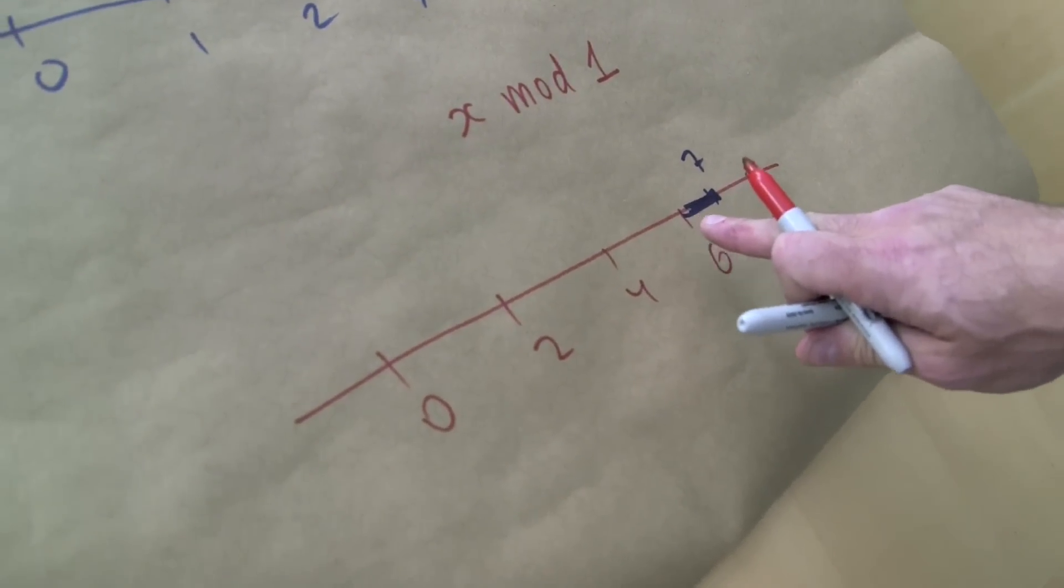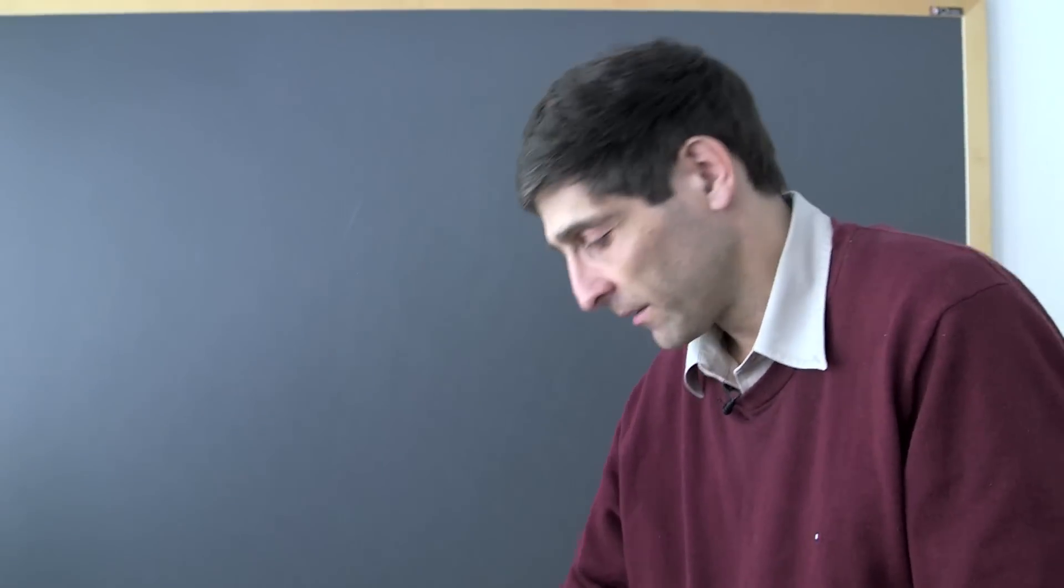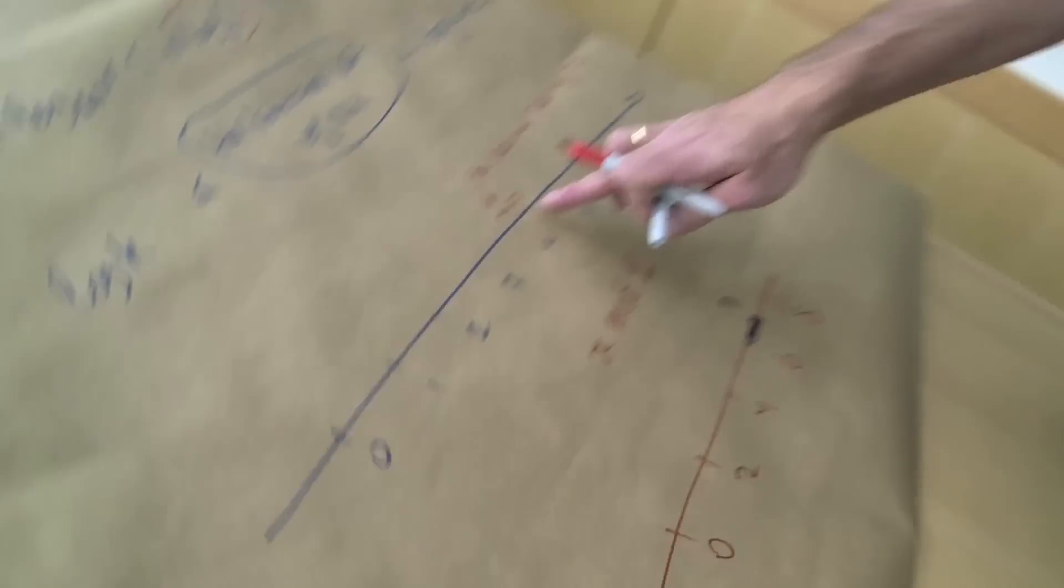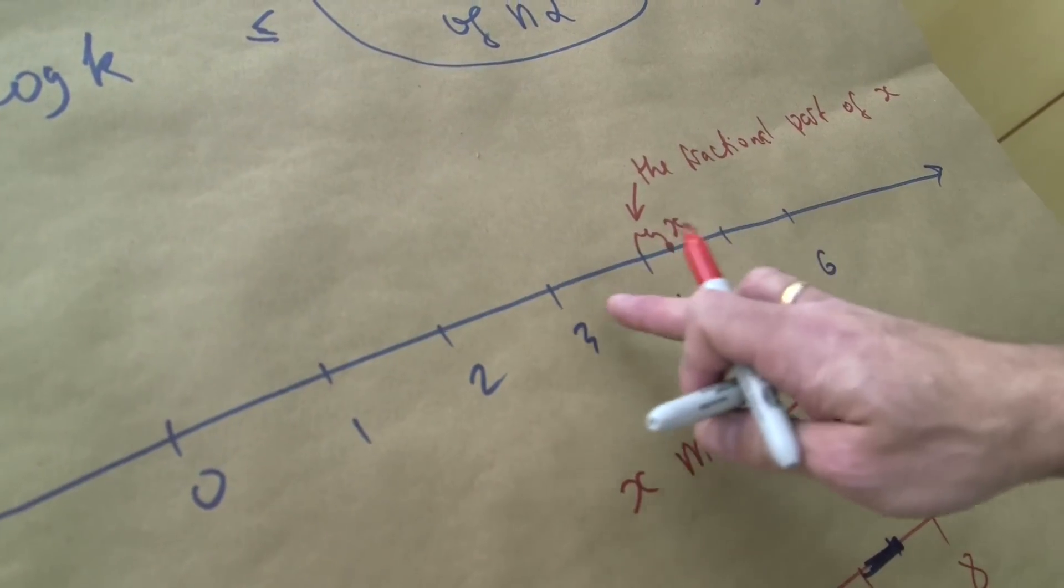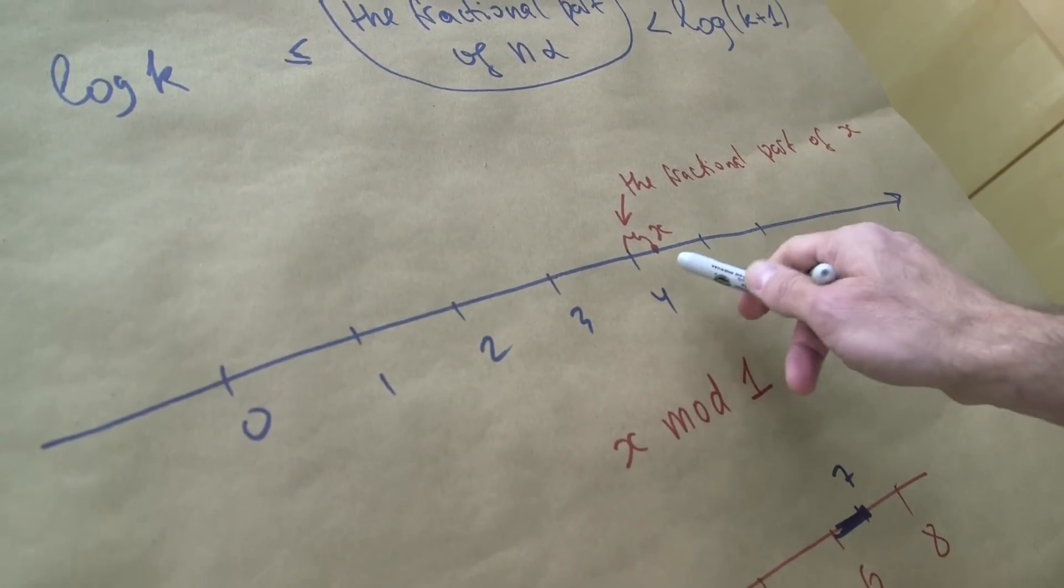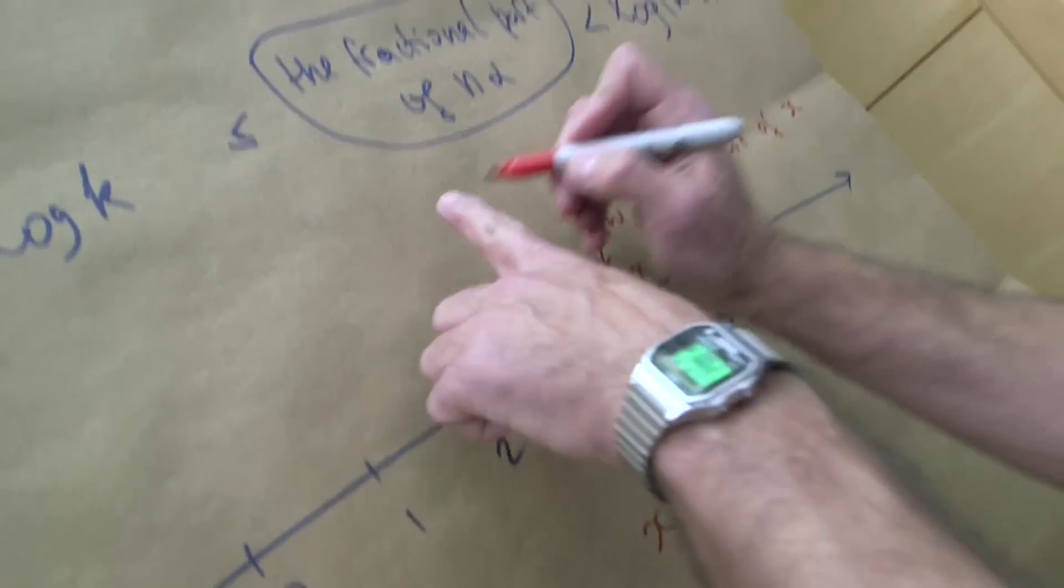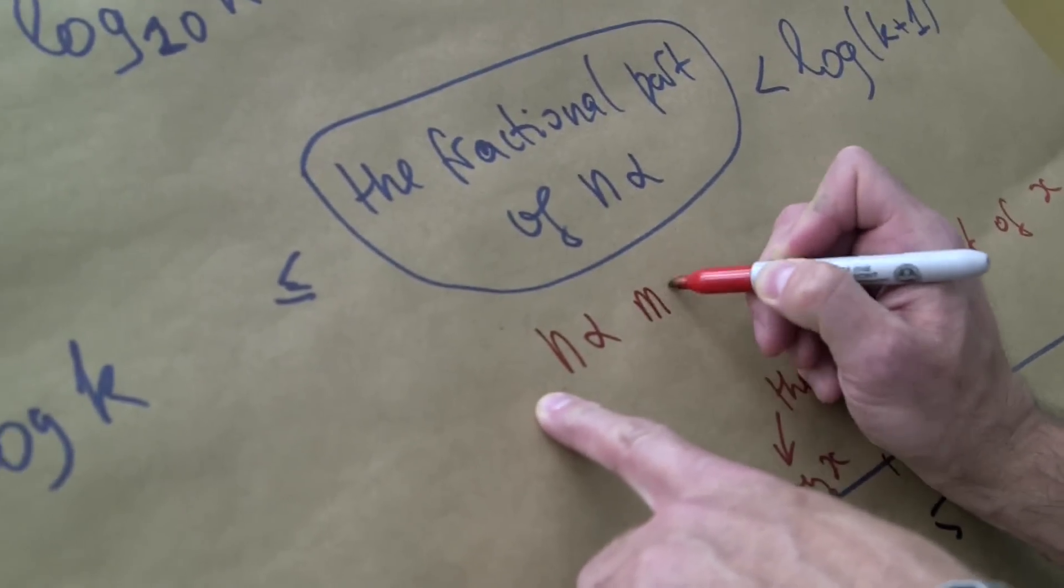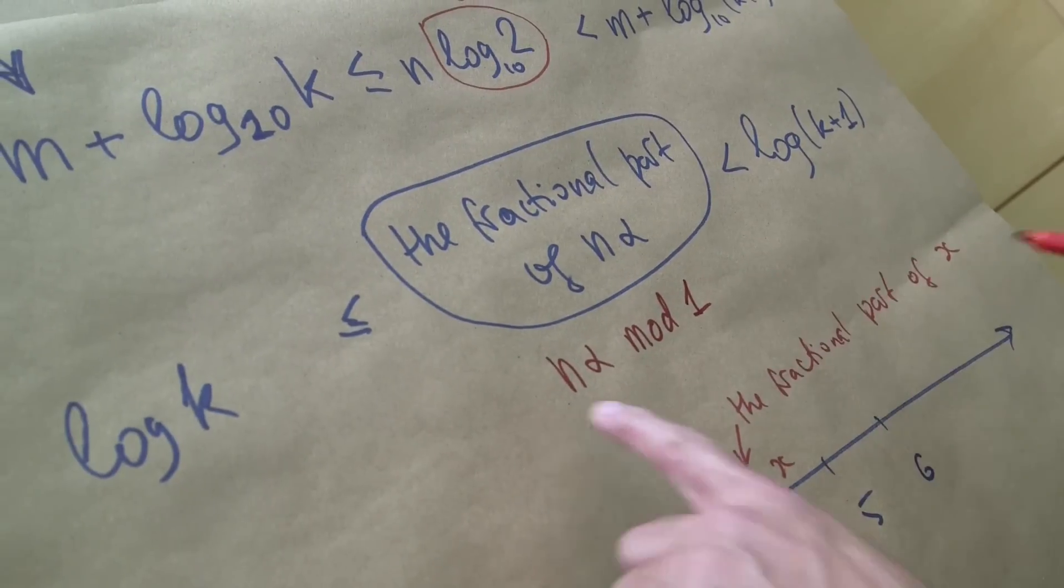So when we divide 7 by 2 we have a remainder, that's exactly what it is: the difference between 7 and the closest even number. Here we do the same for real numbers. We take a real number x and we find the closest integer to the left. It's called the integer part naturally, and the difference is called the fractional part. So I'm going to denote it by n alpha mod 1.